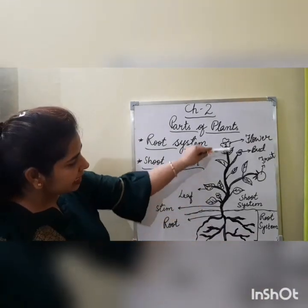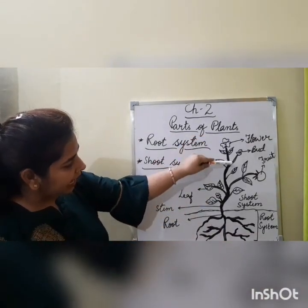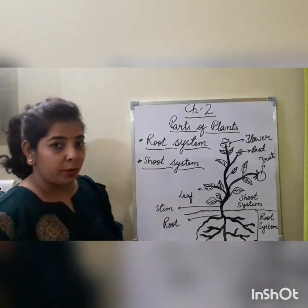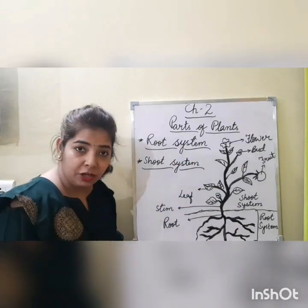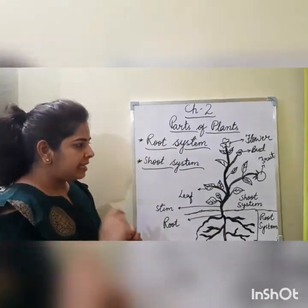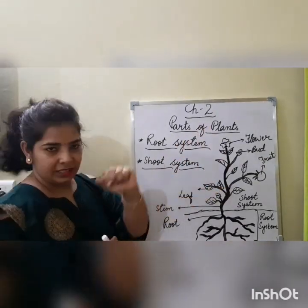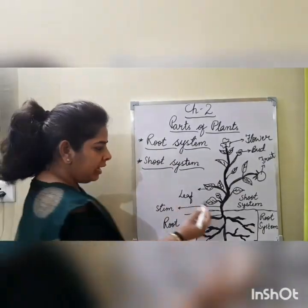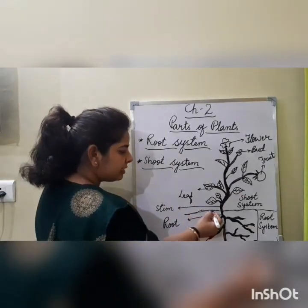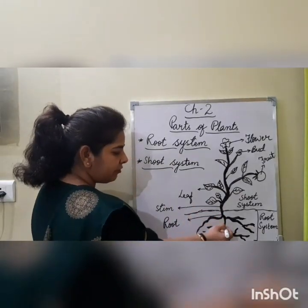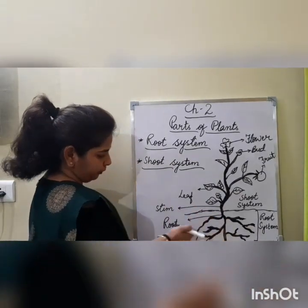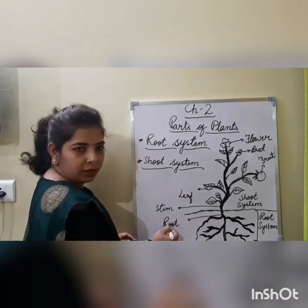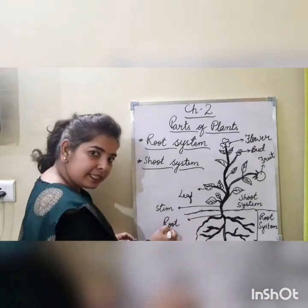And in the shoot system, we have different parts which I am going to explain. This is our plant. In the root system, we have root — these are roots.